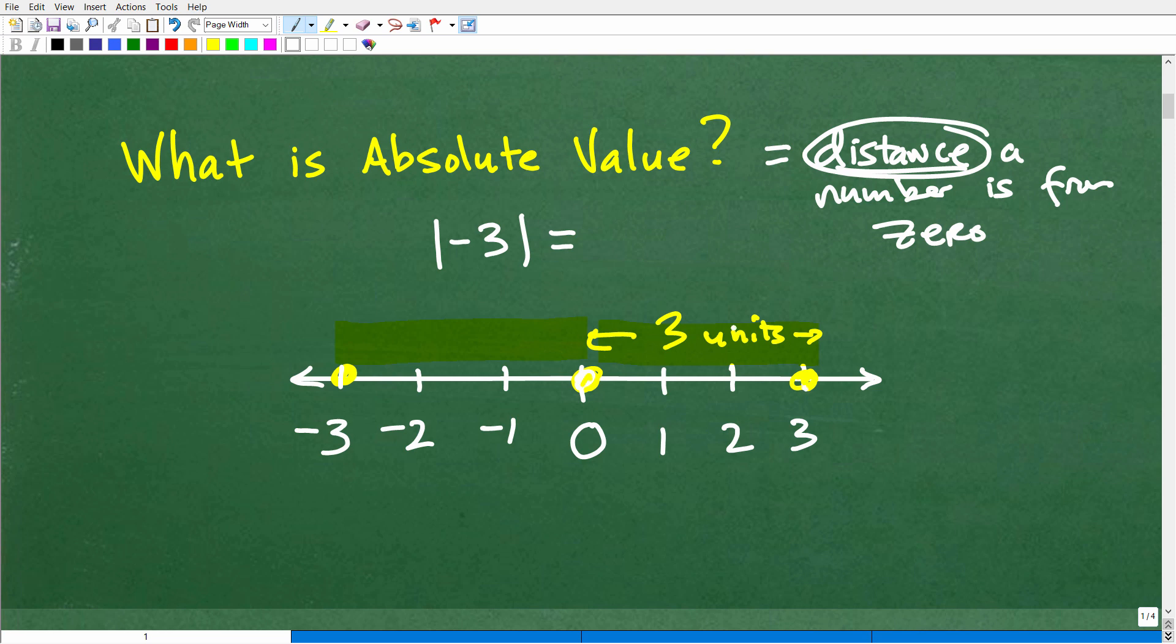So three is three positive units away from zero. But if you look here, the distance that three is from zero is the same distance negative three is from zero. So how far is negative three from zero? Well, it's also three units away, okay? So the absolute value of negative three is how far is negative three from zero? Well, it is three units away, or positive three, okay? So that's why the answer to absolute value, when you're taking the absolute value of all numbers, it's always positive.